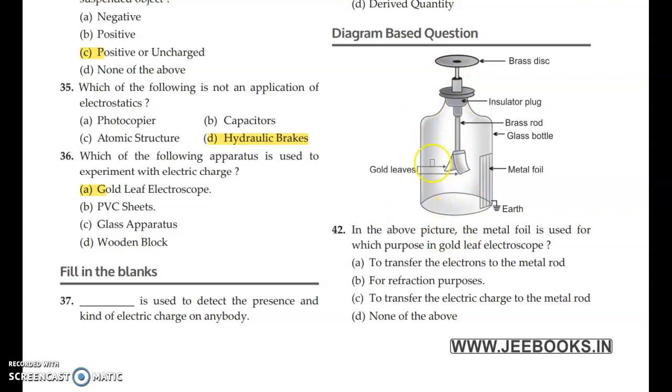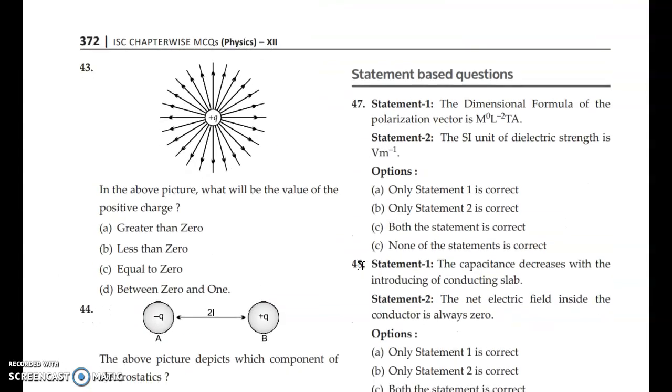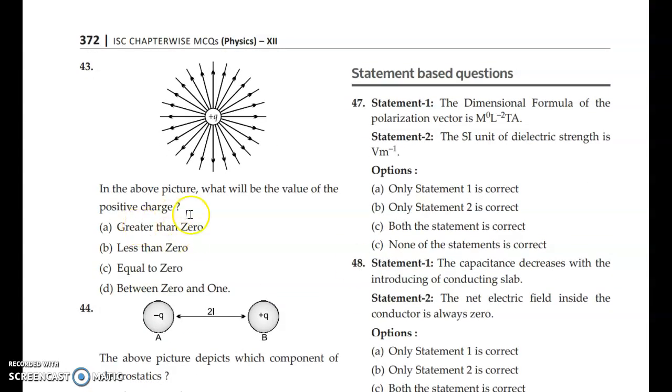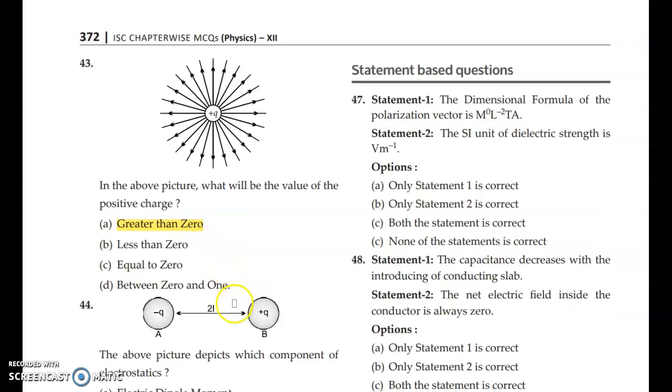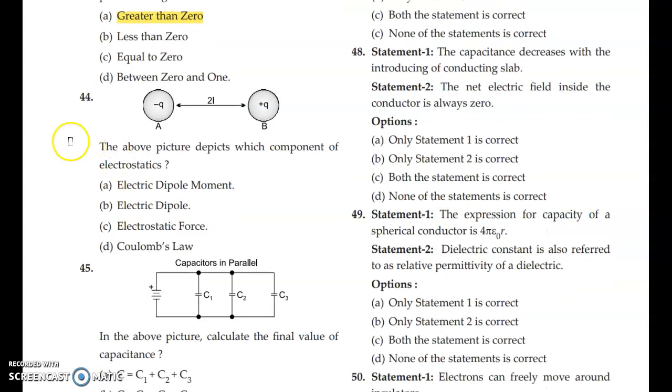Moving to diagram based questions. This experiment of gold leaf electroscope was in 10th class. You will not get it this time in 12th but it is just to revise. Answer is option A. Question 43: In the above picture, what will be the value of the positive charge? Answer is option A, greater than zero. Question 44: The above picture depicts which component of electrostatics? Answer is electric dipole.